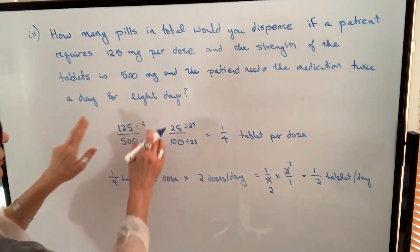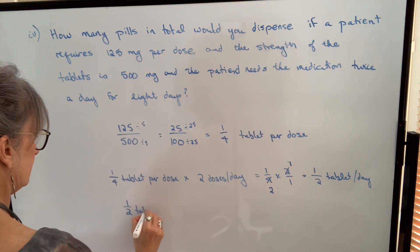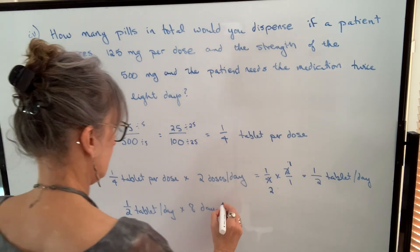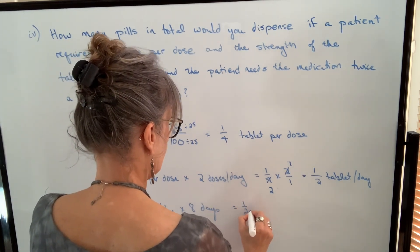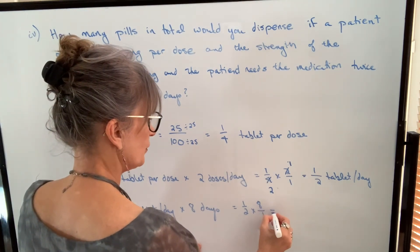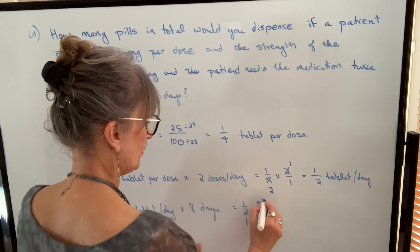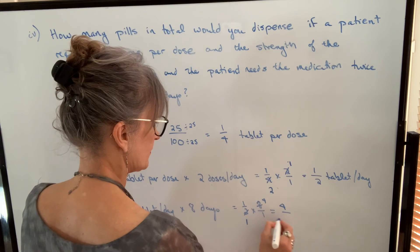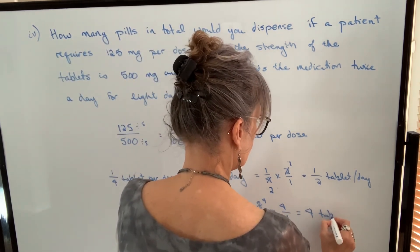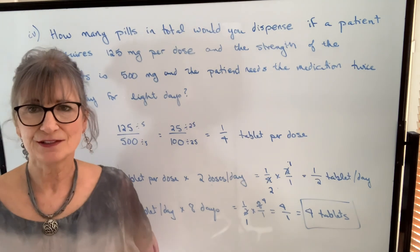We want to know how many pills for eight days, so take one half of a tablet per day and multiply by eight. That's one half times eight over one. Cancel a factor of two: two goes into two once, two goes into eight four times. One times four is four, over one times one is one — a total of four tablets for the patient.